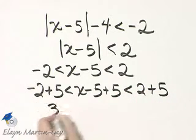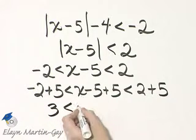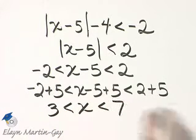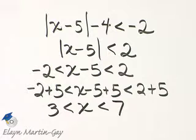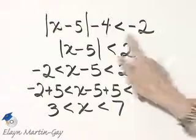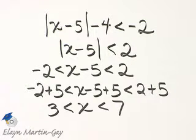Negative 2 plus 5, that's 3 less than x less than 7. I have solved that all numbers between 3 and 7 are solutions to our original inequality.